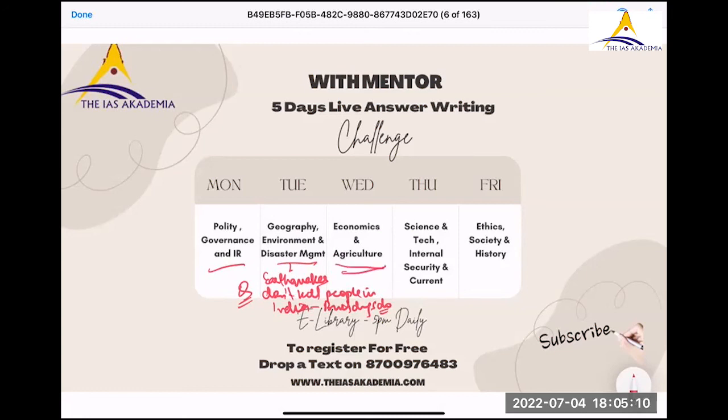Then economics and agriculture will be on Wednesday, science tech and current and also your internal security will be on Thursday. On Friday we will do ethics society and history. This way we are covering all the GS papers. And for now we are giving one answer every day at 5 p.m. You can write the discussion plus the evaluation. There is no you have to register on this number but already you people are registered so you don't need to register. Thank you everyone for your time. Thank you. Last question what answer answer writing question where are you?